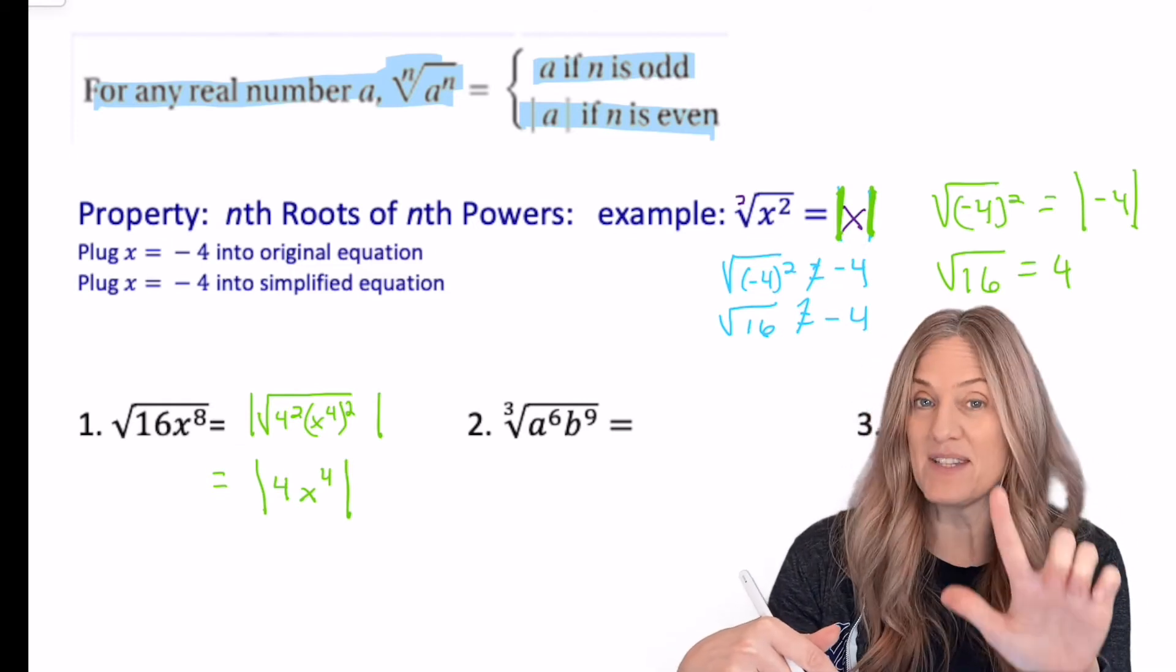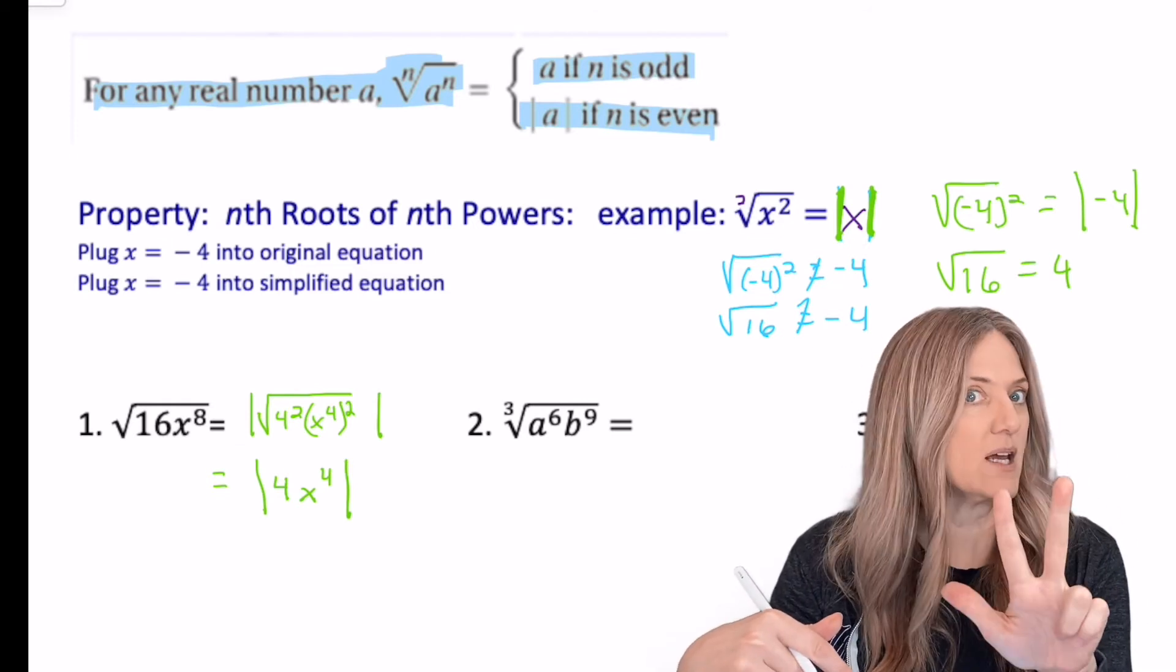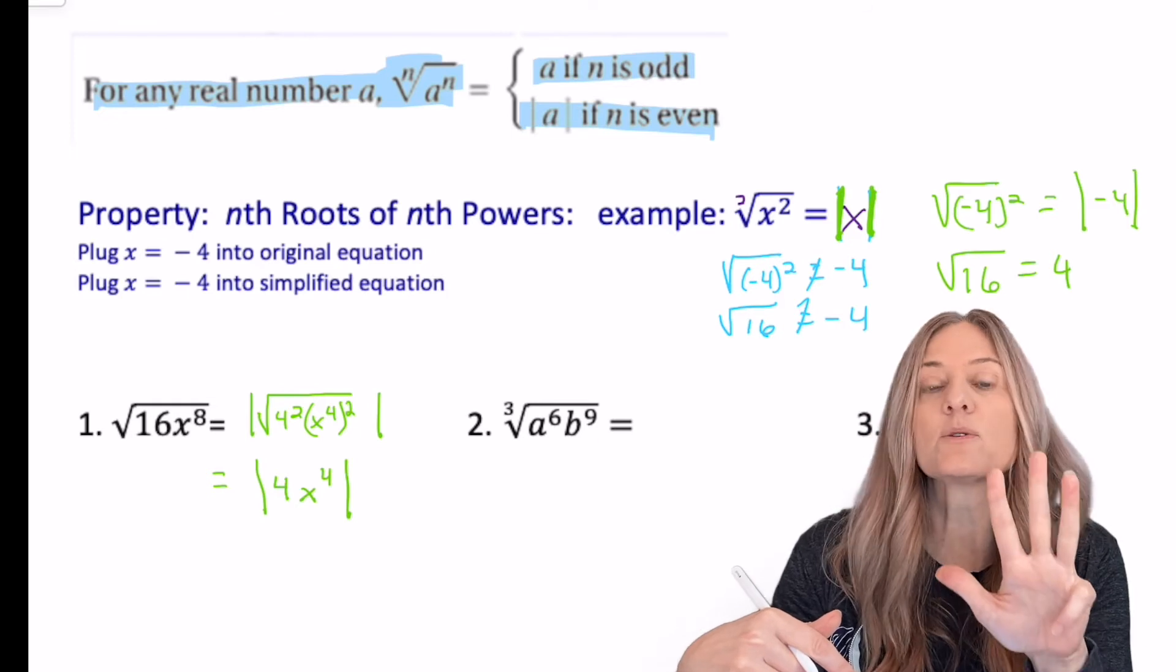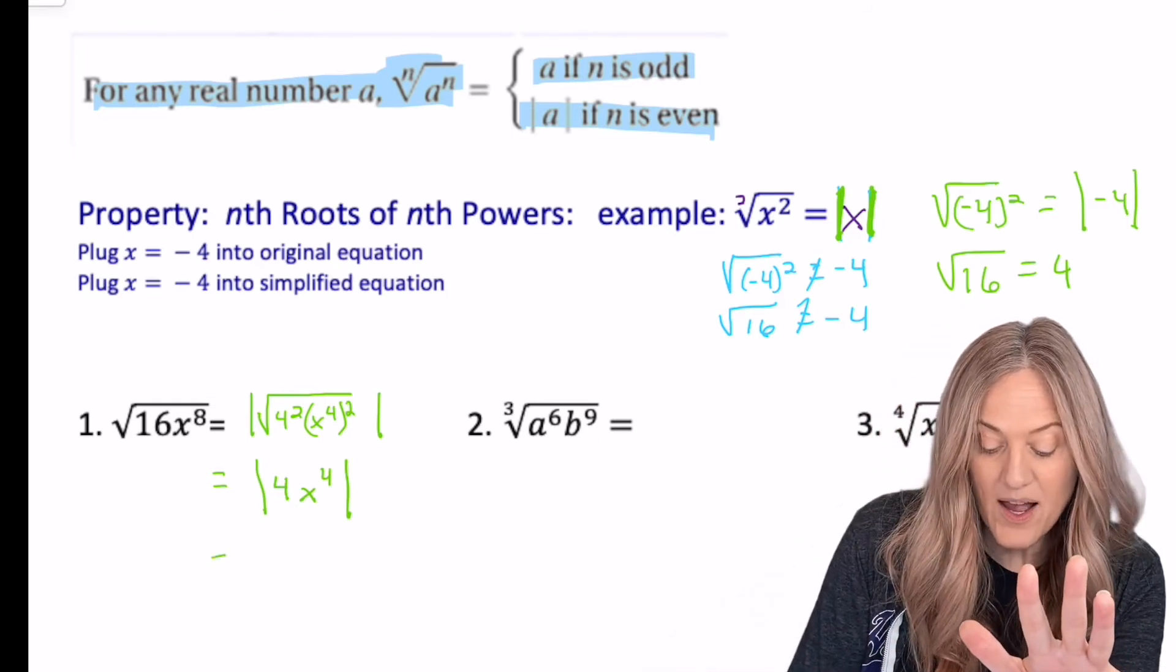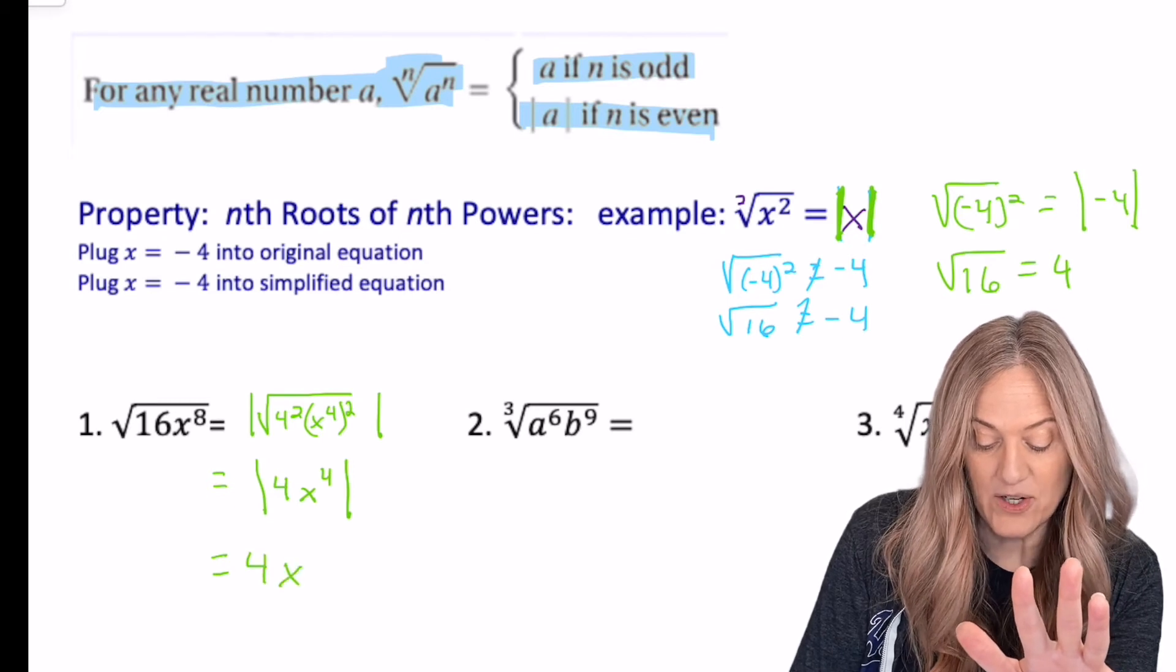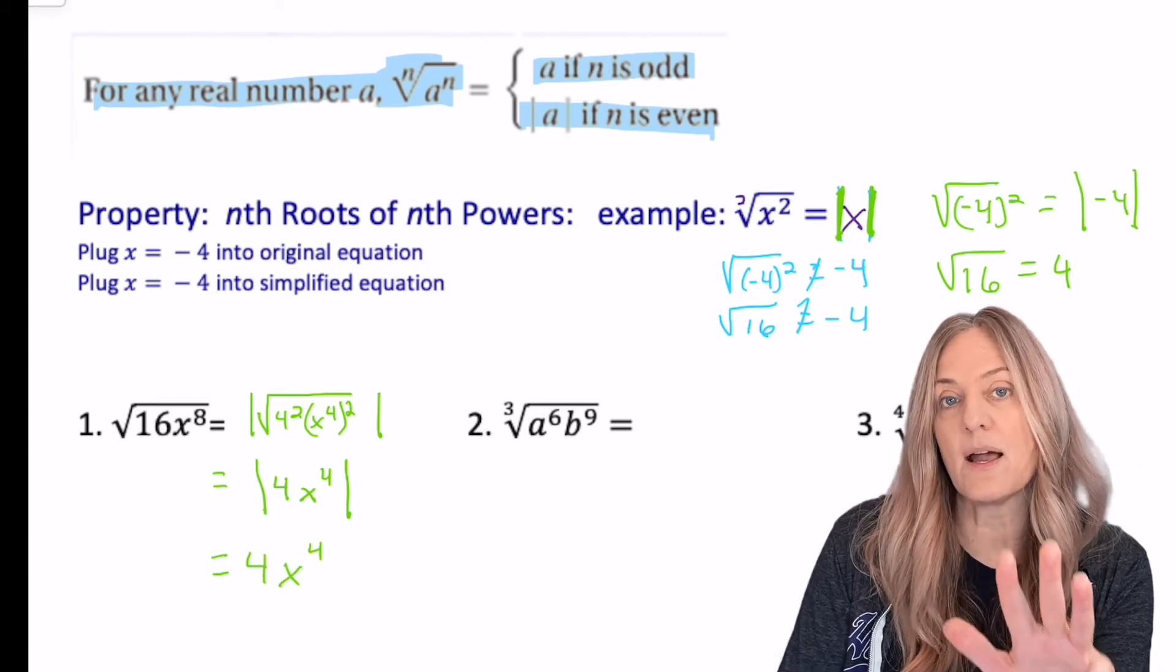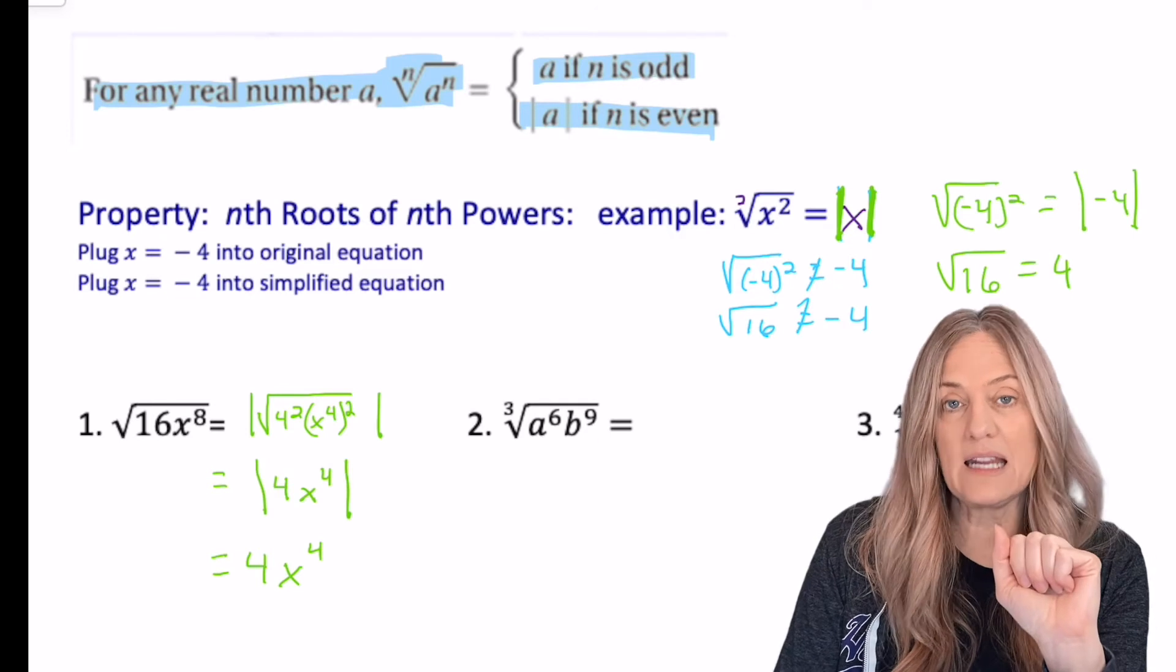So negative two times negative two would be positive four times negative two is negative eight times negative two is positive 16. So in this case, I do not have to have my final answer in absolute value bars, but I absolutely needed to think about it.